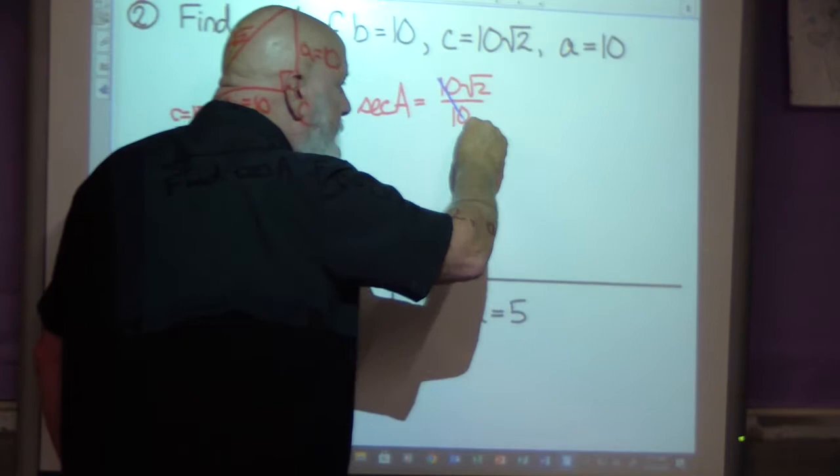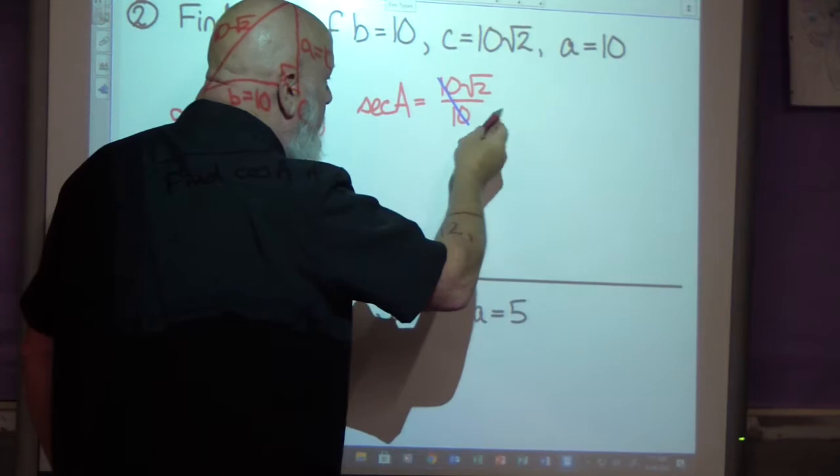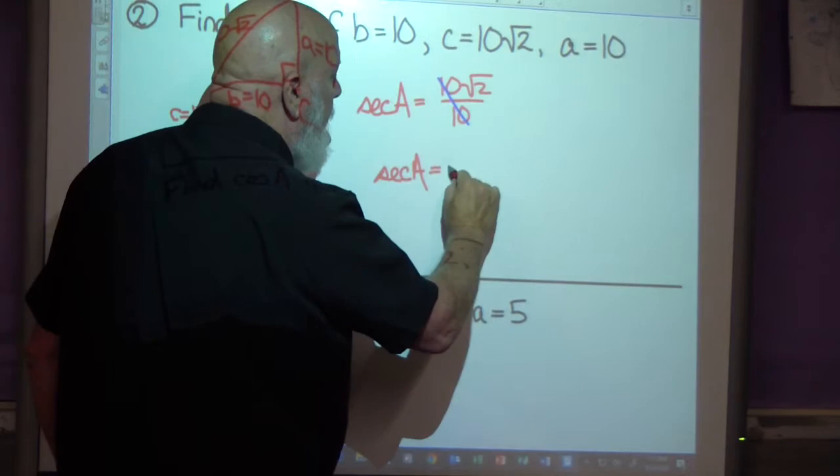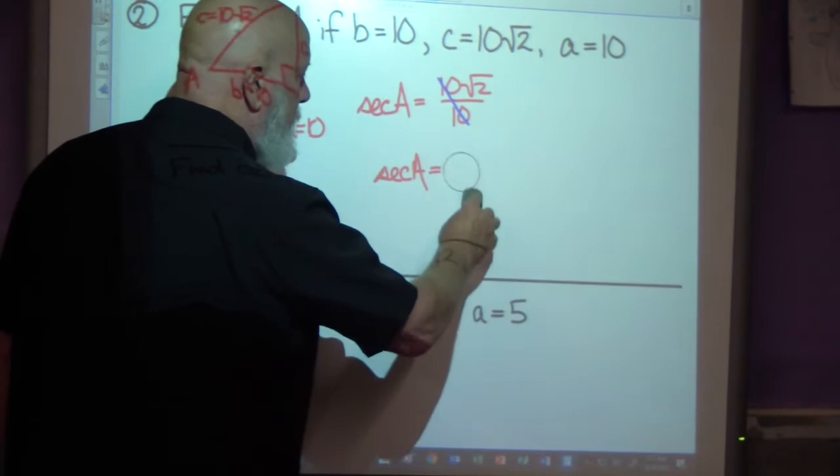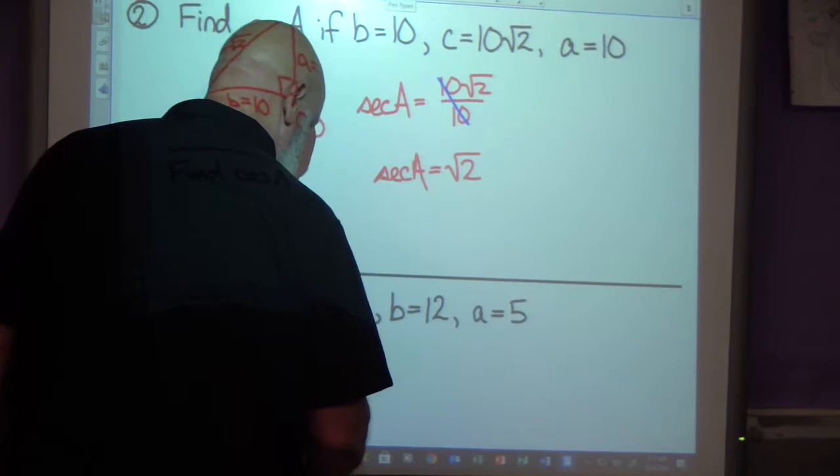These tens will cancel one another out and leave me with one radical 2 over 1, which we just call radical 2. And that is what I would be looking for among my choices, providing I haven't made any mistakes. I think the answer is radical 2. I'm kind of sloppy this morning. There we go.